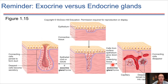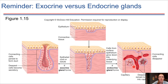Endocrine glands, what we're going to be talking about in this chapter, are more like what's shown on the right. There is no duct leading out to the surface. Instead, the gland produces hormones, and those hormones diffuse through the tissues and get taken up by the bloodstream via a capillary. So with endocrine glands, the hormones are staying inside and are just being transported through the blood.